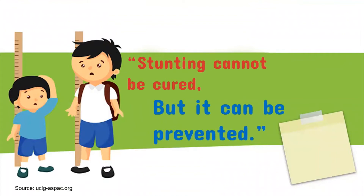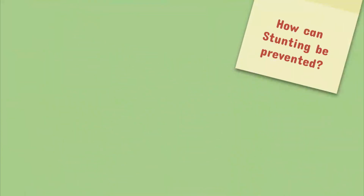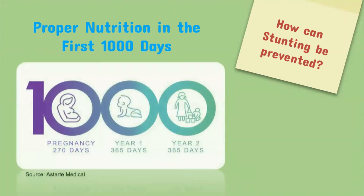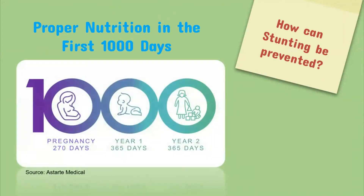The next question is, how do we do that? The answer is proper nutrition in the first 1,000 days. The first 1,000 days is described as the period from conception to a child's first two years of life and is considered the golden window of opportunity for a child to achieve his or her full potential in the aspects of development. This is the period during which key health, nutrition, early education, and related services should be delivered to ensure the optimum physical and mental development of a child.